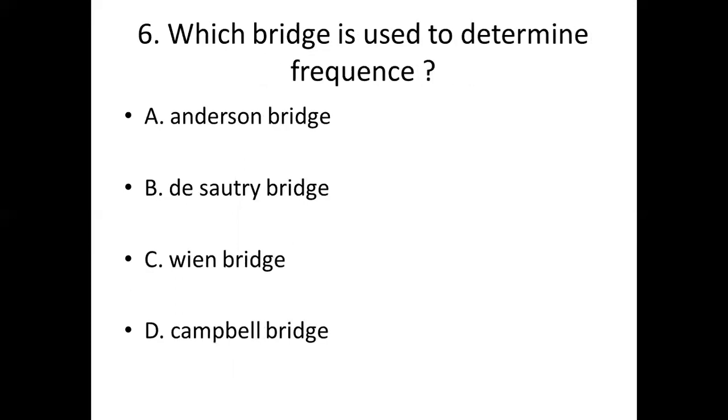Sixth bit. Which bridge is used to determine frequency? Option A, Anderson bridge; Option B, Schautz bridge; Option C, Wien bridge; Option D, Campbell bridge. Answer is C, Wien bridge.